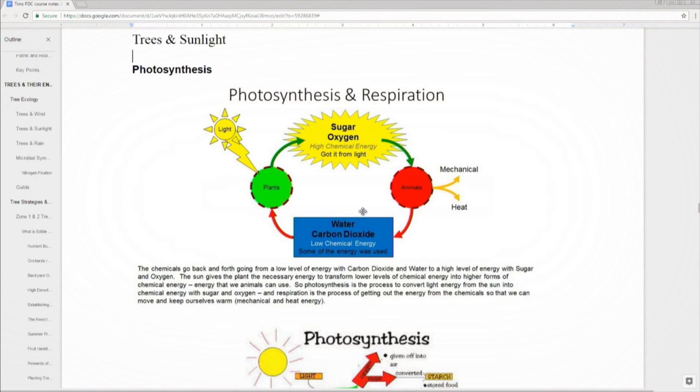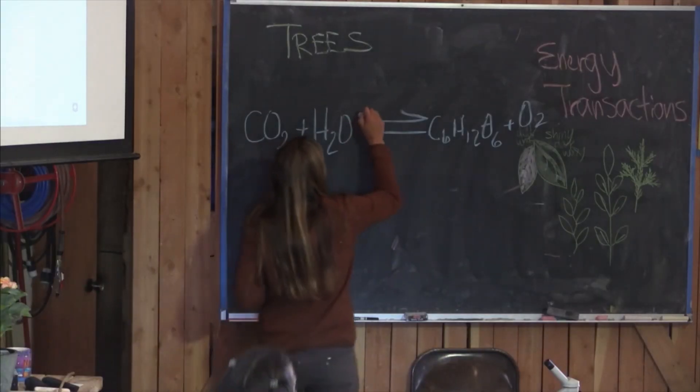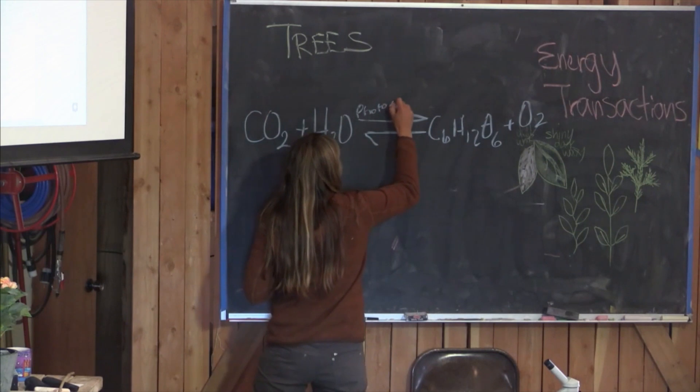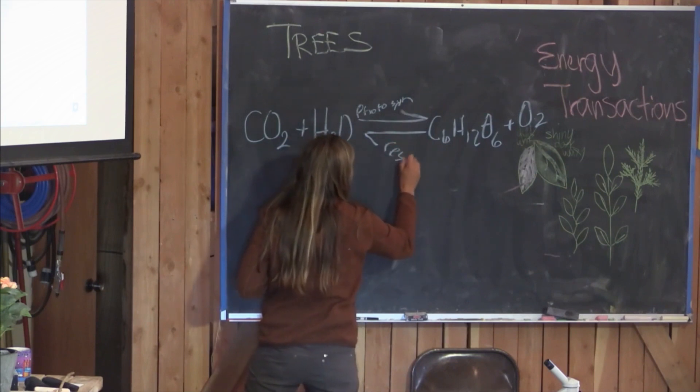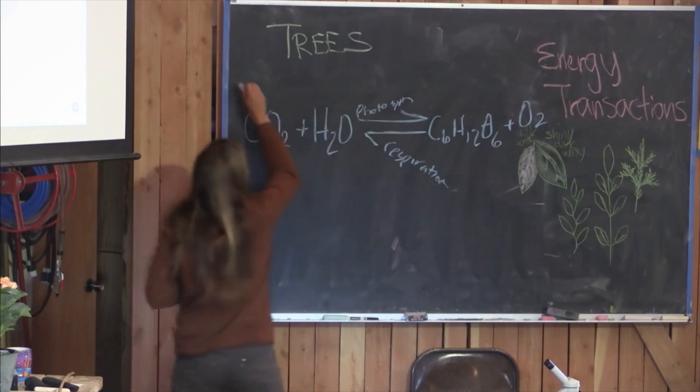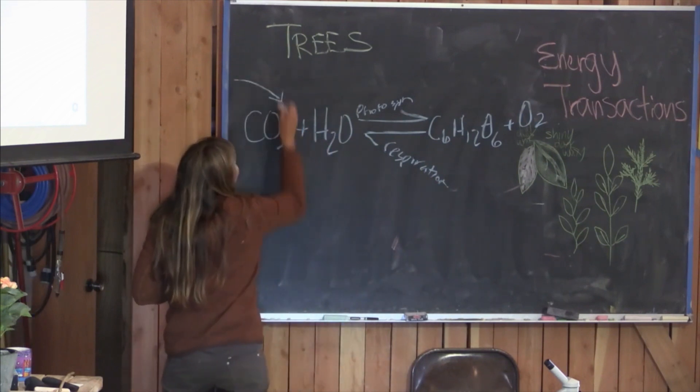And respiration or in photosynthesis, that means this arrow is going this way, this is a backwards and forwards reaction. So photosynthesis is here and respiration is here. This is the equation of life. Throw a day and night in there too, maybe.